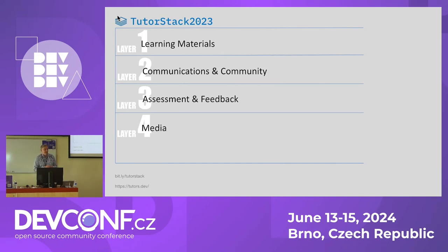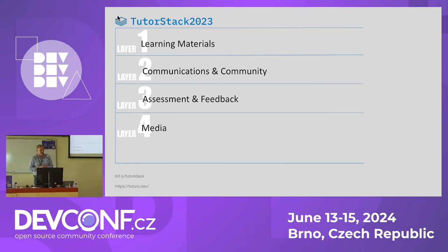The first layer is learning materials. Traditionally this is the learning management system or virtual learning environment used in your university. Tutors.dev is a solution to that. We also have communications and community — it starts with communications, trying to get people talking together, and that evolves into a community. This is the single biggest point of failure in online courses, because you either have too much communication or multiple systems all repeating the same thing, which is a real frustration for students.